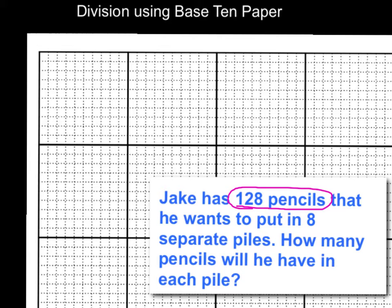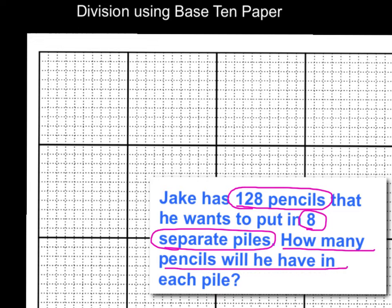And he wants to put them in 8 separate piles, and I'm assuming he wants to split them evenly. So it says how many pencils will he have in each pile? He has 128 — I'm going to think of that as separating a bunch of pencils and putting them into plastic school boxes. So I have a dividend or a total of 128, I have to separate it into 8 groups. My divisor is 8, my dividend is 128.